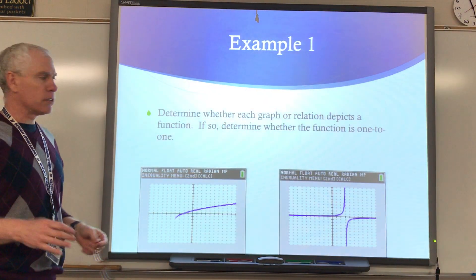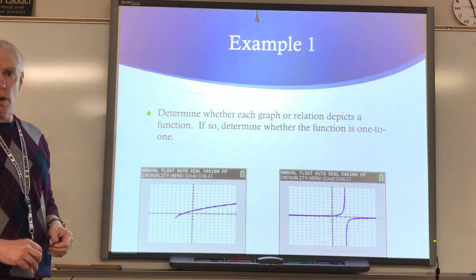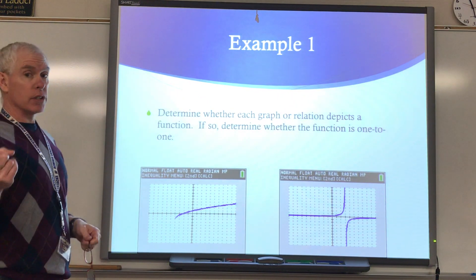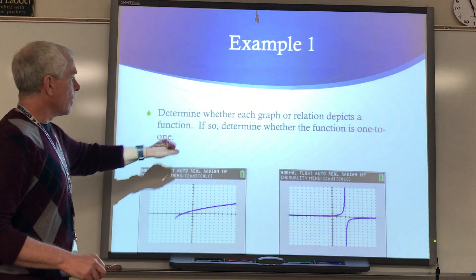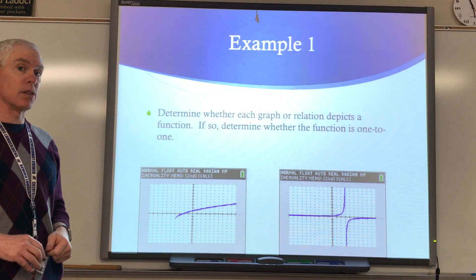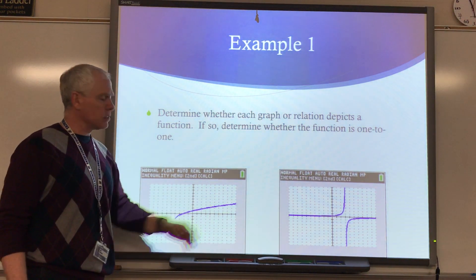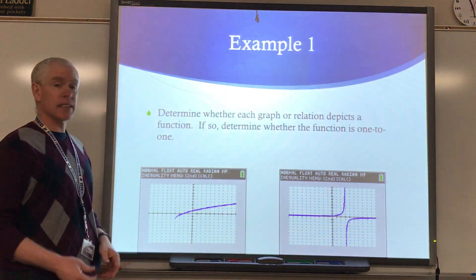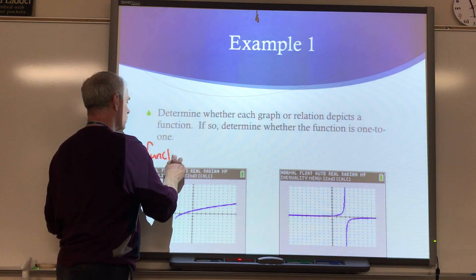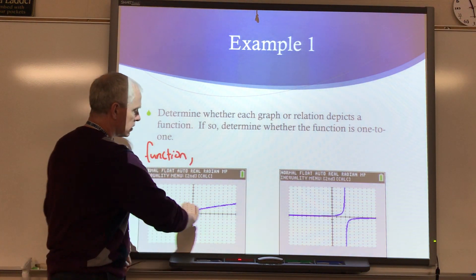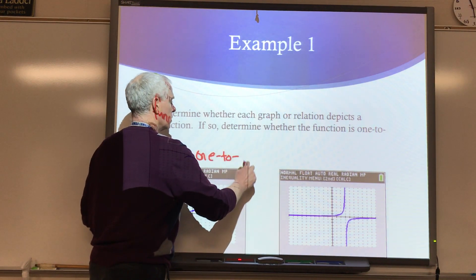Determine whether each graph or relation depicts a function. If so, determine whether the function is one-to-one. If it's a function, it passes the vertical line test — that's the first part of the question. And then we're supposed to determine if it's one-to-one, which means it also passes the horizontal line test. This graph here looks like a square root function. It definitely passes the vertical line test, so yes, it is a function, and it also passes the horizontal line test, so it is one-to-one.